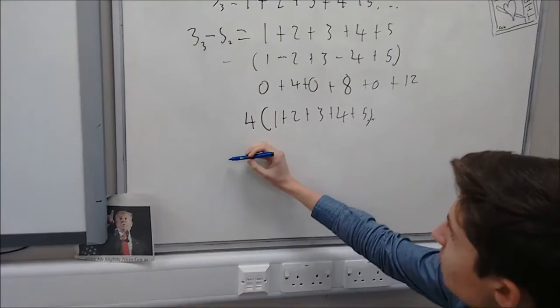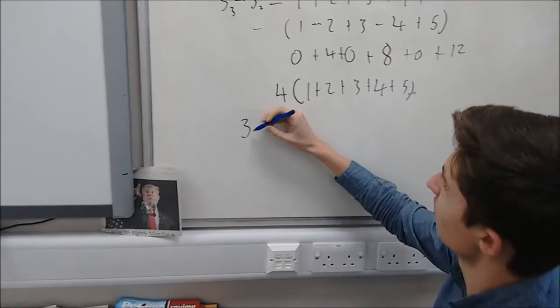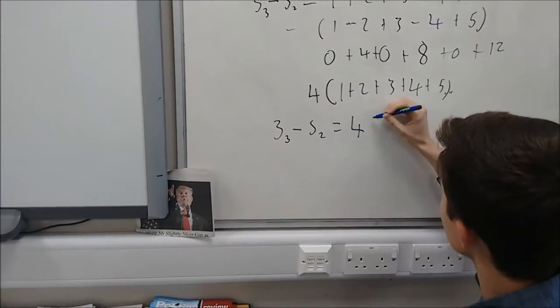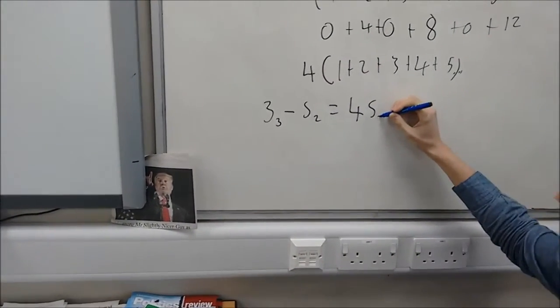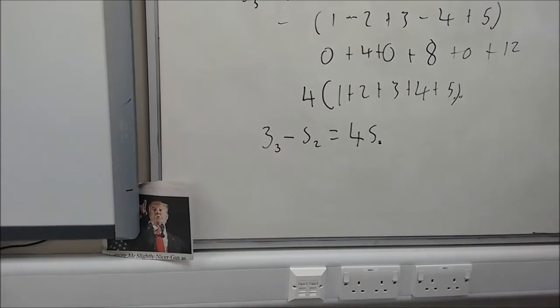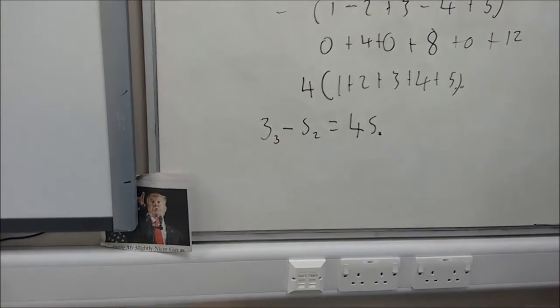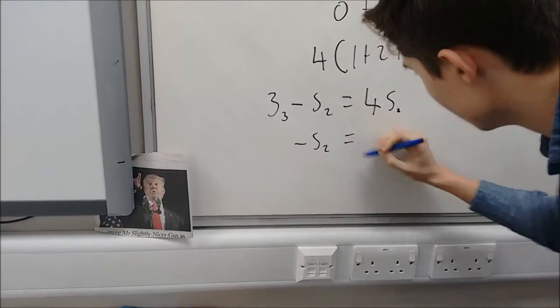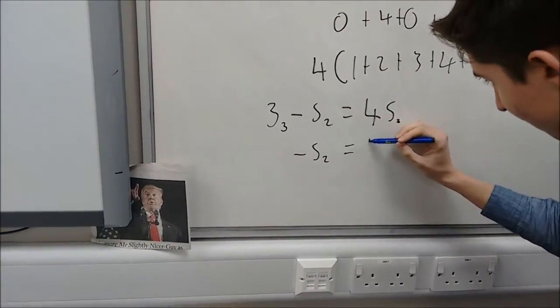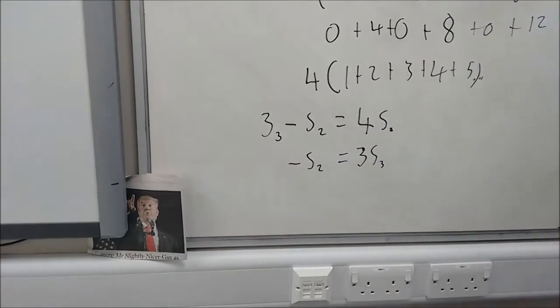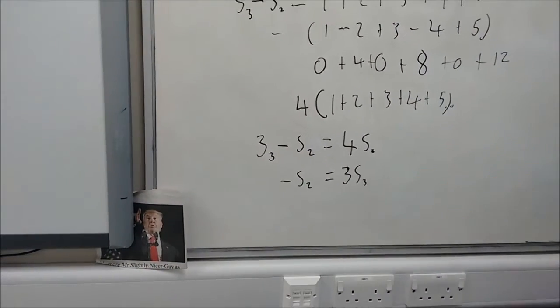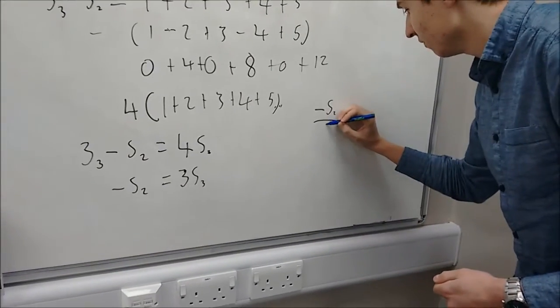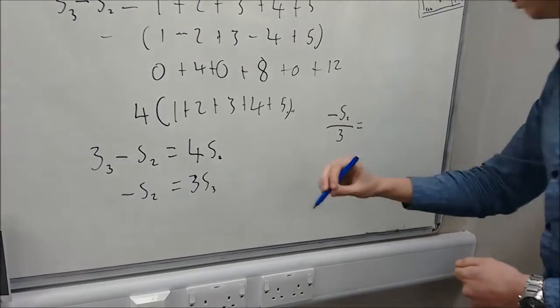So you can start to do the algebra here. So S3, the equation we want, minus S2 equals 4 times S3. So how are we going to rearrange this? We're going to take off 1 from this side. We're left with minus S2 equals 3S3. And we can divide through by 3 to get minus S2 over 3 equals S3.